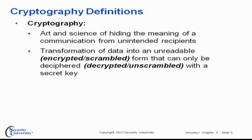Now let's make sure we understand what the term cryptography means. It's the art and science of hiding the meaning of communication from unintended recipients. We can do hiding over a network, and we can also do hiding when we've stored data. We're transforming data into an unreadable — referred to as encrypted or scrambled — form, and it can only be reversed, deciphered, by using decryption, or unscrambling, using some type of secret key. A lot of folks fall into the trap of calling all of this encryption. But in reality, encryption is only half the process — that's the scrambling act. To make it valuable, the party on the other end has to decrypt it.